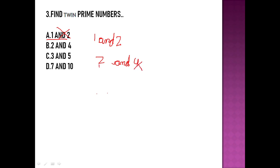Both numbers must be prime. Option C is 3 and 5 — three is a prime number and five is also a prime number. They are consecutive primes and have a difference of two: 5 minus 3 equals 2. So option C, three and five, are the twin prime numbers.